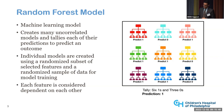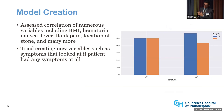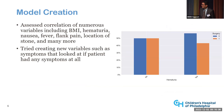Our initial step was to assess correlation of many features like BMI, hematuria, nausea, fever, flank pain, and others with our outcome of spontaneous stone passage. For example, patients without hematuria were 50-50 likely to have surgery or not, and patients with hematuria were actually less likely to require surgery, suggesting hematuria is not well correlated with our outcome. That is one of the reasons we ended up not using it in our model.